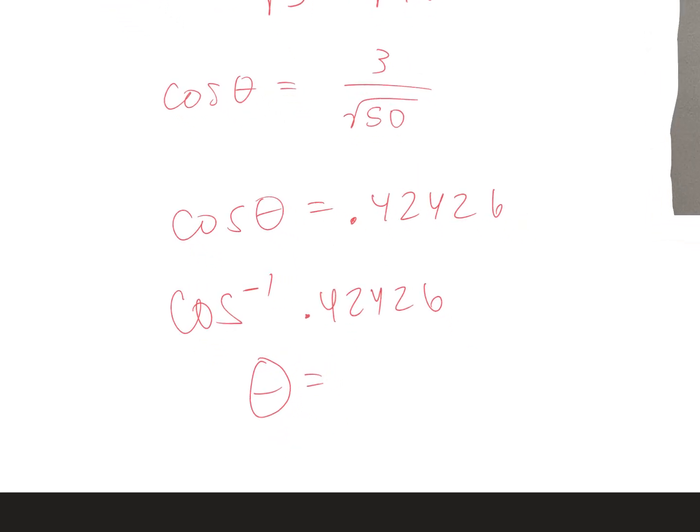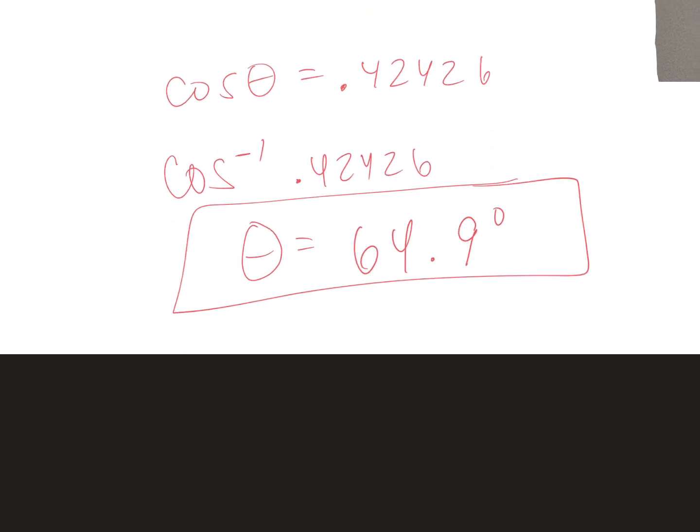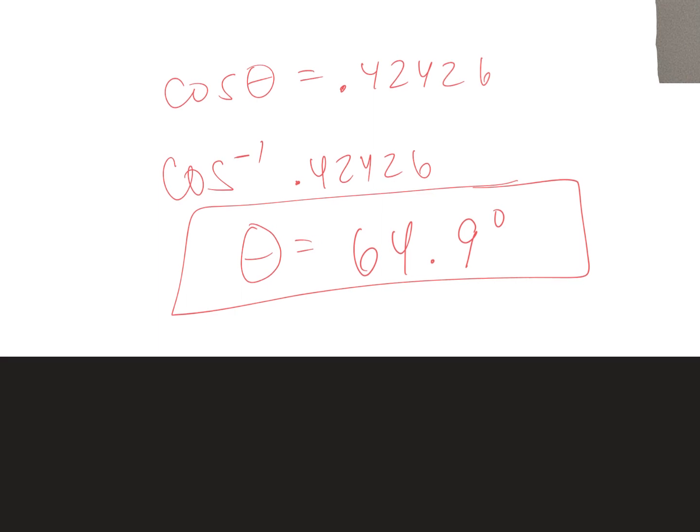And it will tell you what your angle measure is. What is the measure of this angle? What number or what decimal? Give me one decimal, please. It's 64.9. 64.9 degrees. Does that make sense? Go ahead. If you guys want to look back at the vectors that we did in previous chapters, it would be lessons 6.3 and 6.4. We'll finish this tomorrow.